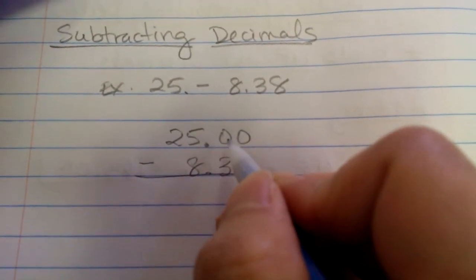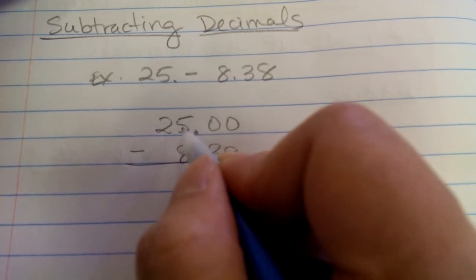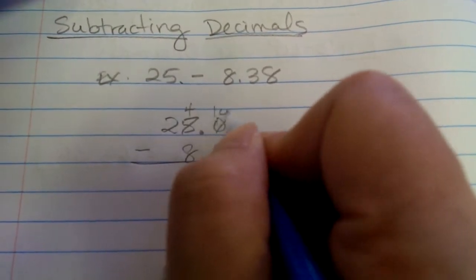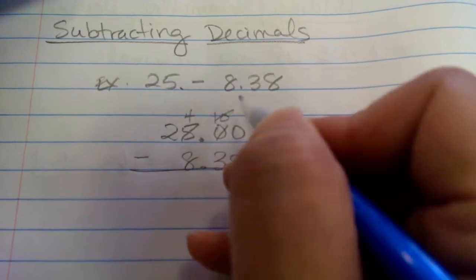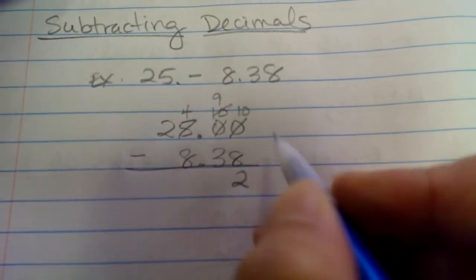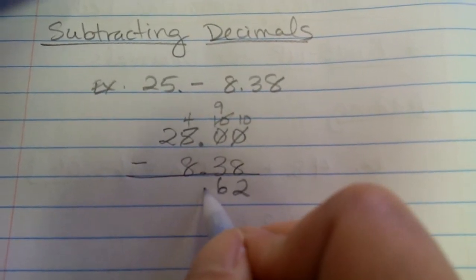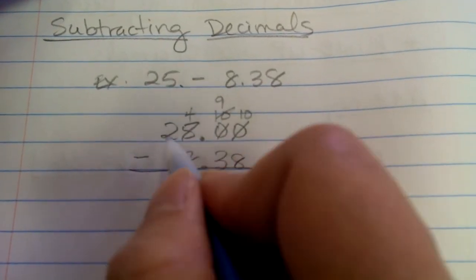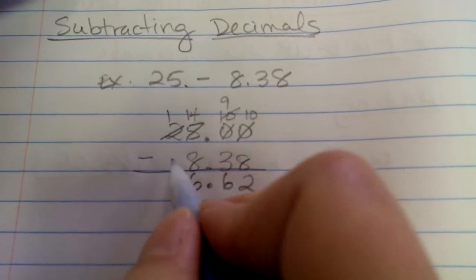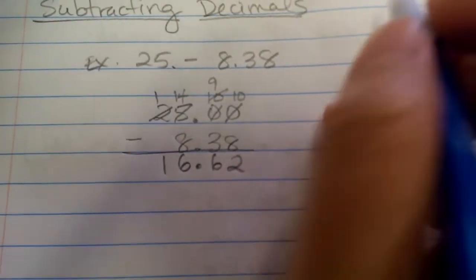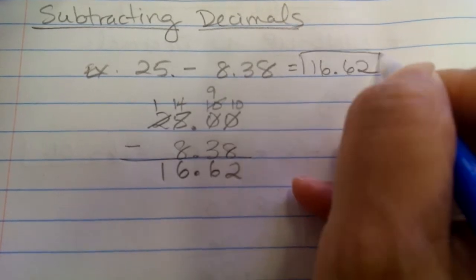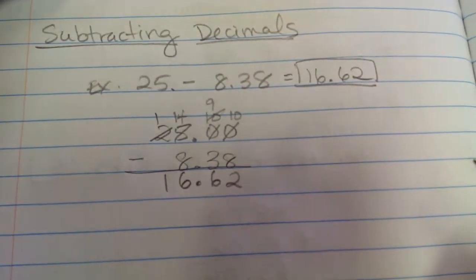Now, is there anything to borrow here? No. So this digit needs to borrow from the 5. So the 5 becomes a 4, and this becomes a 10. Now, can we borrow from the 10? Yes. The 10 becomes a 9, and this becomes a 10. 10 minus 8 is 2. 9 minus 3 is 6. Bring down the decimal. 4 minus 8, can we do that? No. Borrow. Now, it's 14 minus 8, which is 6, and 1 minus 0 is 1. So our answer, 25 minus 8 and 38 hundredths, would be 16 and 62 hundredths.